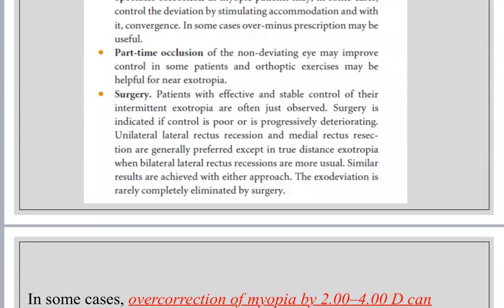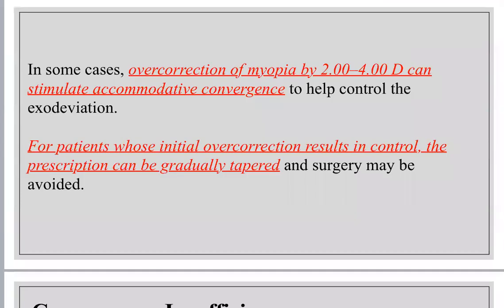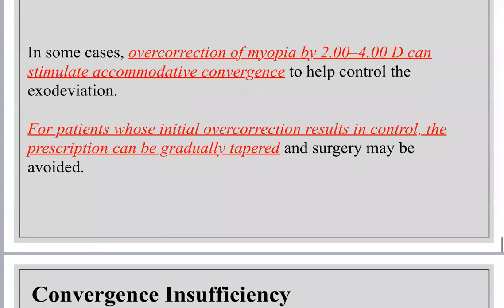For surgery in exodeviation: I may do recession of the lateral rectus bilaterally, or operate on one eye. If the angle is large, I operate on three or four horizontal rectus muscles. Overcorrection by myopia (minus two to four diopters) can stimulate accommodative convergence and help control exodeviation.